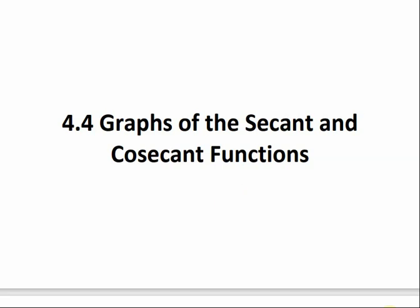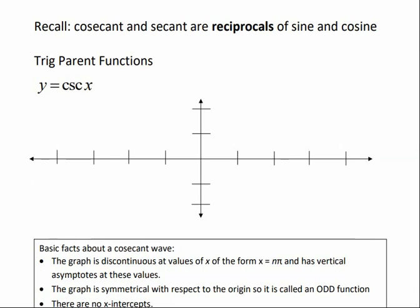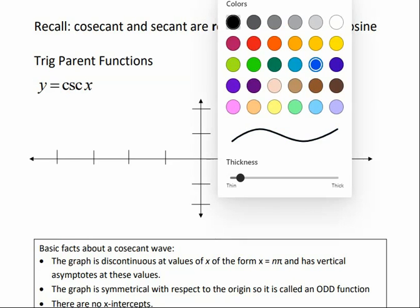Section 4.4: Graphs of the secant and cosecant functions. Cosecant and secant are reciprocals of sine and cosine, so we're going to use that information to help us graph cosecant and secant. We're going to start with the graph of cosecant. Cosecant is the reciprocal of the sine function, so we're going to sketch the graph of the sine function first.